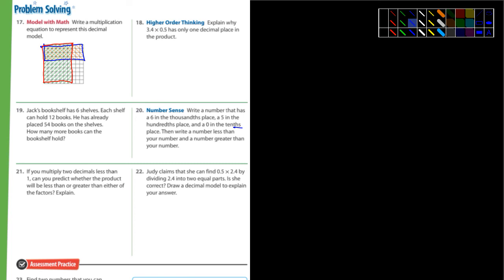Number 21, if you multiply two decimals less than 1, can you predict whether the product will be less than or greater than either of the factors? Explain. I'm going to let you guys think about that one. Remember, if you multiply any number, let's say I multiply Z times 0.9, the answer is going to be less than Z because it's less than 1, what I'm multiplying it by. And then, if I multiply Z times a number that's greater than 1, let's say 1.5, the answer will be greater than Z because any time you multiply something by a number greater than 1, then it's going to be a little bit larger.